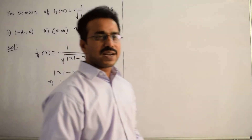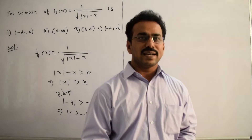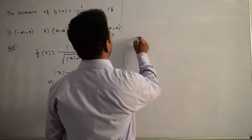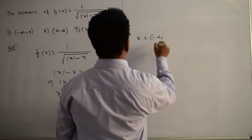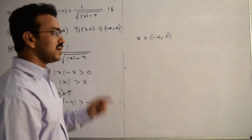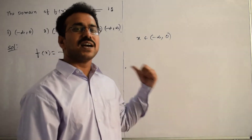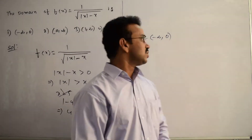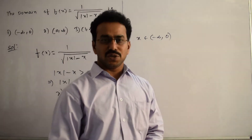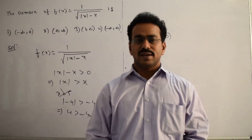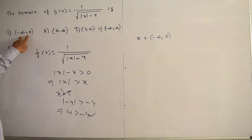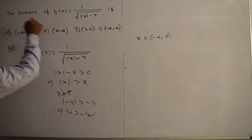Therefore, the domain is x ∈ (-∞, 0), an open interval. We exclude 0 because at x = 0 the denominator becomes 0 and the function is undefined. Comparing with the given options, (-∞, 0) is exactly correct; the rest of the options are incorrect.